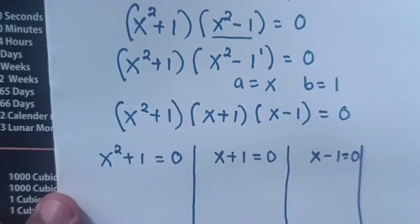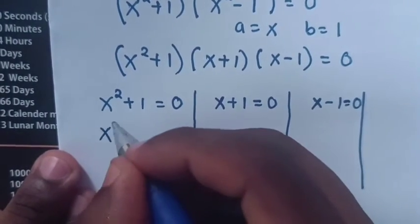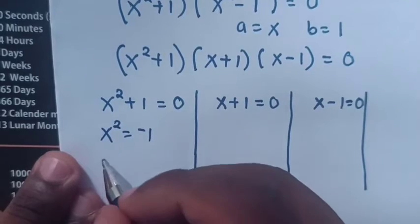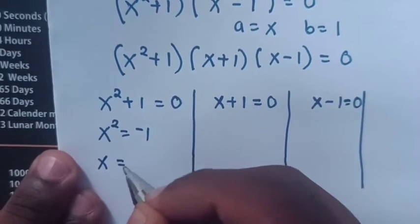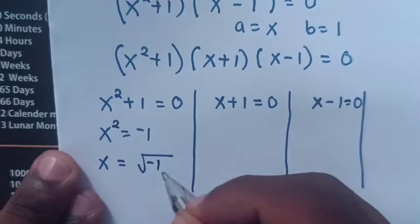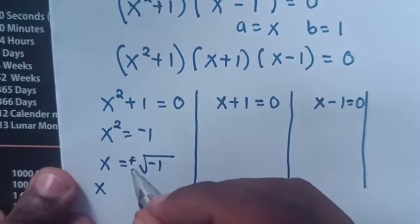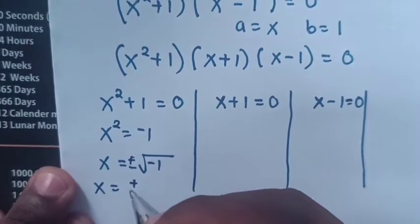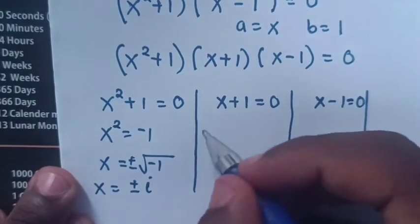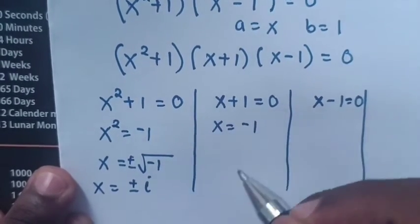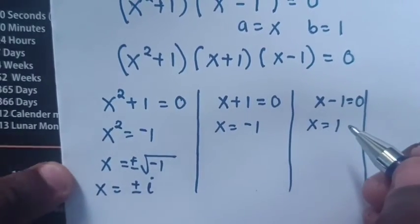From x² + 1 = 0, we get x² = -1, so x = ±√(-1), which gives x = ±i. From x + 1 = 0, x = -1. From x - 1 = 0, x = 1.